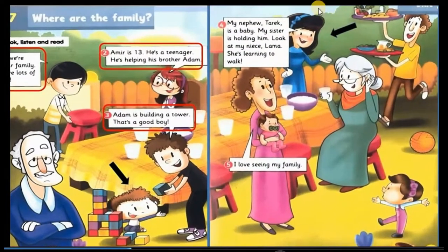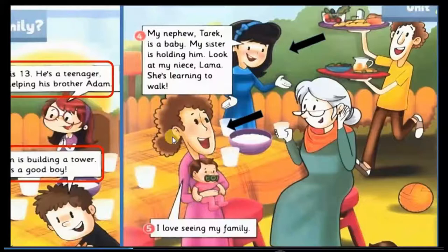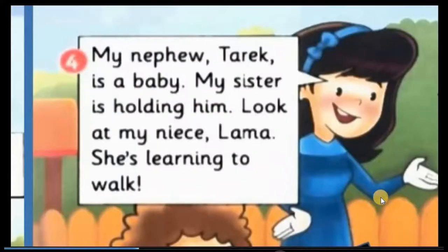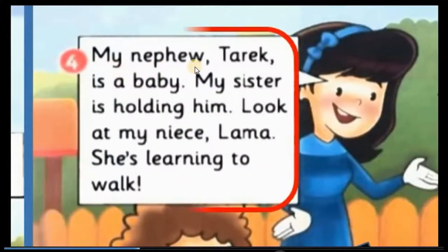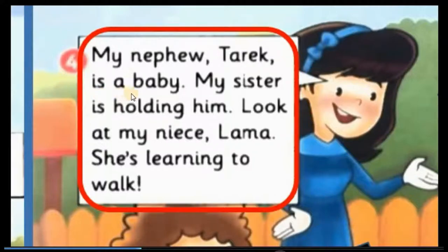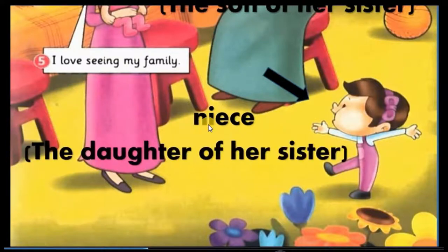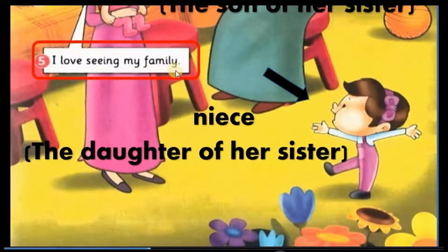Here is the second dialogue. This is the mother, this is her sister, and this is her nephew — the son of her sister. She says: my nephew Tariq is a baby; my sister is holding him. Look at my niece Lama — she is learning to walk. This is her niece Lama, the daughter of her sister. I love seeing my family.